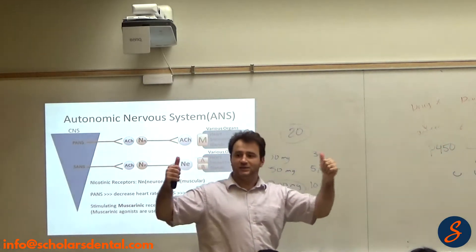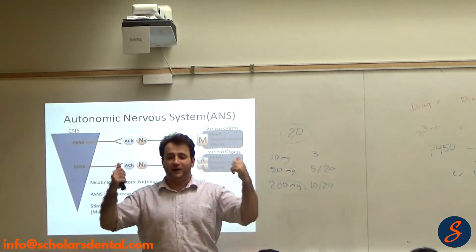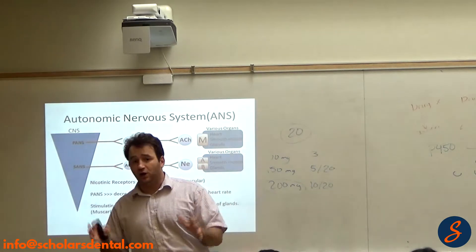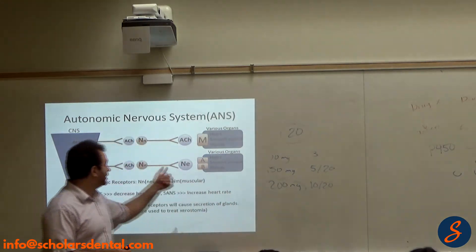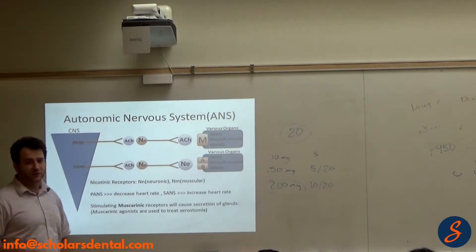Muscarinic. So all glands in the body will secrete by stimulating muscarinic receptors. Almost all glands in the body will secrete, stimulated from the parasympathetic system, except?